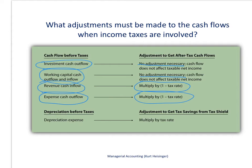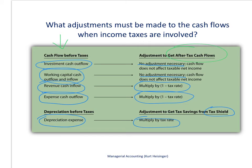Depreciation expense, although it's not a cash outflow, does affect our taxable income — it reduces it. To get the actual cash benefit, often called the tax savings or tax shield, we take the depreciation expense and multiply it by the tax rate. Using our example, we multiply by 0.4 to get the actual cash tax savings from depreciation. This summarizes the adjustments needed to convert before-tax cash flows to after-tax cash flows, which we need to calculate net present value and internal rate of return.